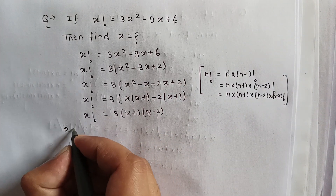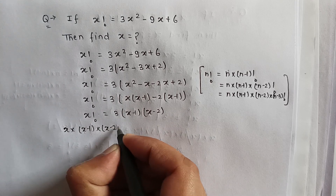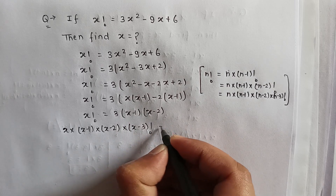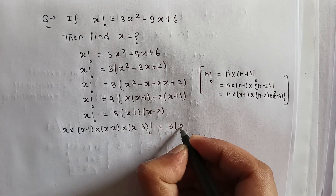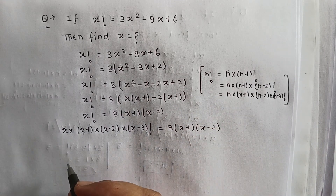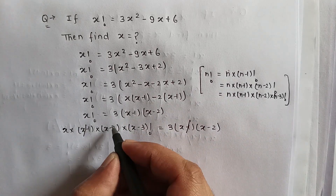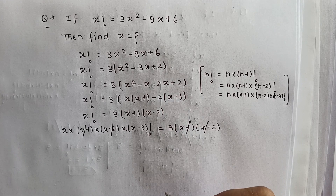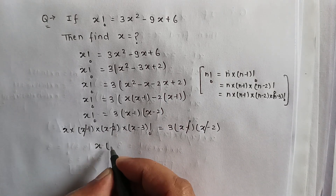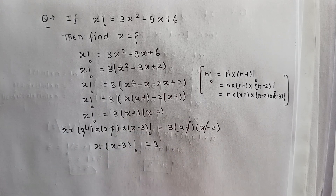So expanding x factorial as x multiplied by (x minus 1) multiplied by (x minus 2) multiplied by (x minus 3) factorial, the (x minus 1) and (x minus 2) terms cancel out on both sides, leaving x multiplied by (x minus 3) factorial equal to 3.